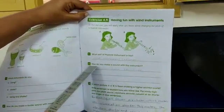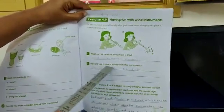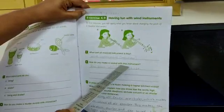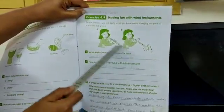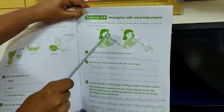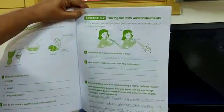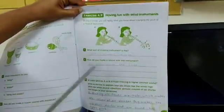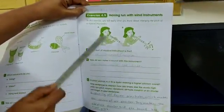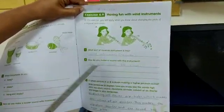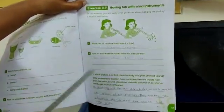Question number 2. How do you make a sound with this instrument? What is she doing? She is blowing the air. You blow down the tube.